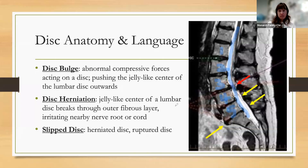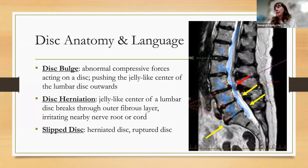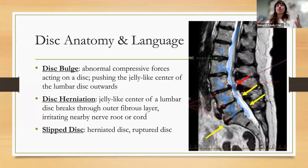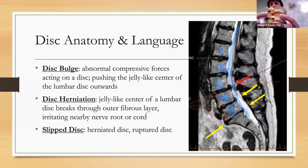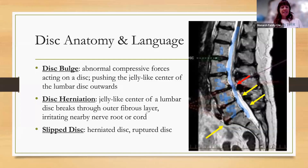A disc bulge is when you have abnormal compressive forces acting on that disc, and it pushes that jelly-like center outwards towards the outer portion of the disc. Those outer spaces are where you have soft tissue, the cord, and the nerve that exits out. When that disc bulges, it impacts all of that. It's pushing out towards one of these holes where a nerve exits, or toward all the soft tissues that connect from bone to bone. But the jelly center has not escaped.